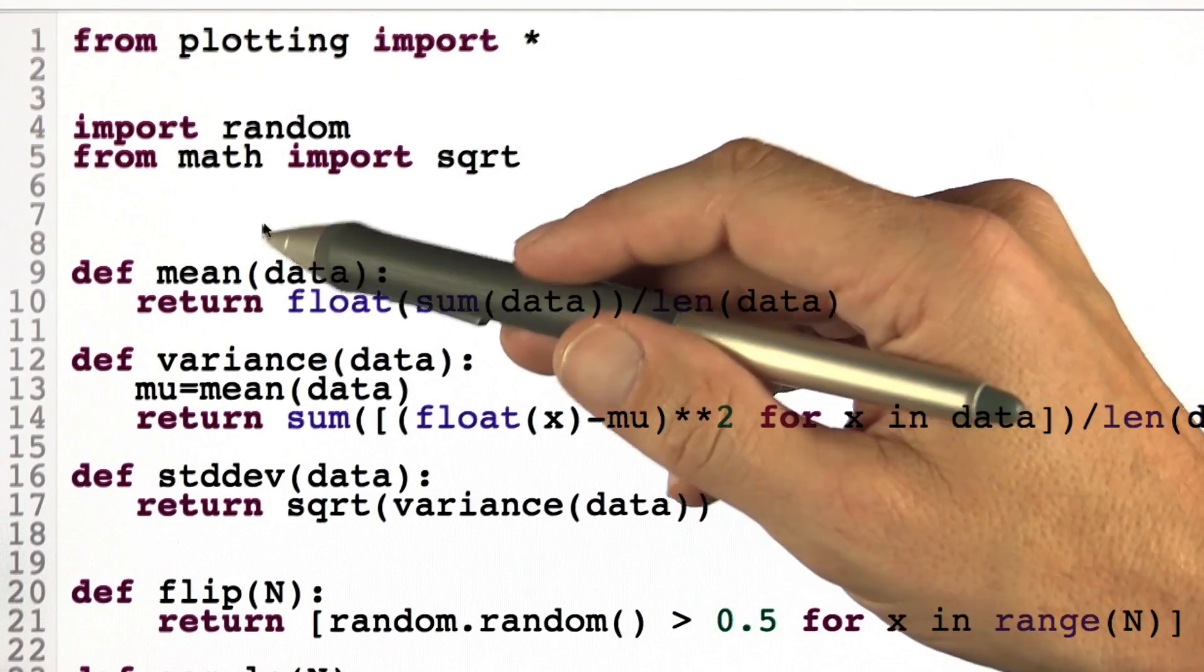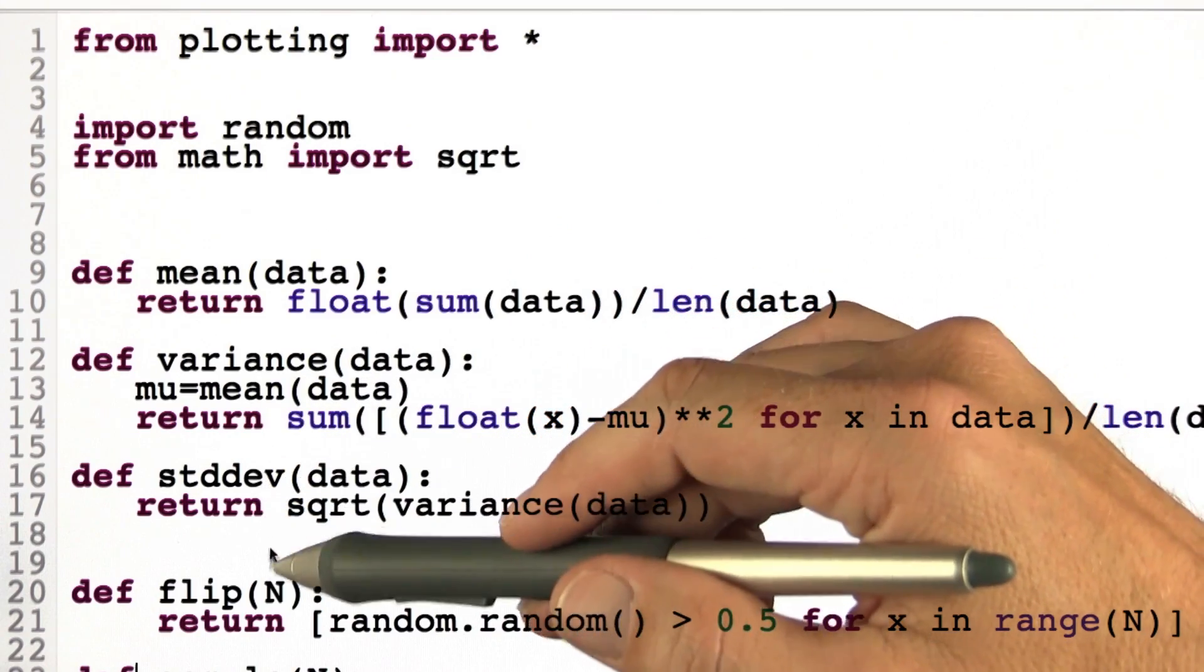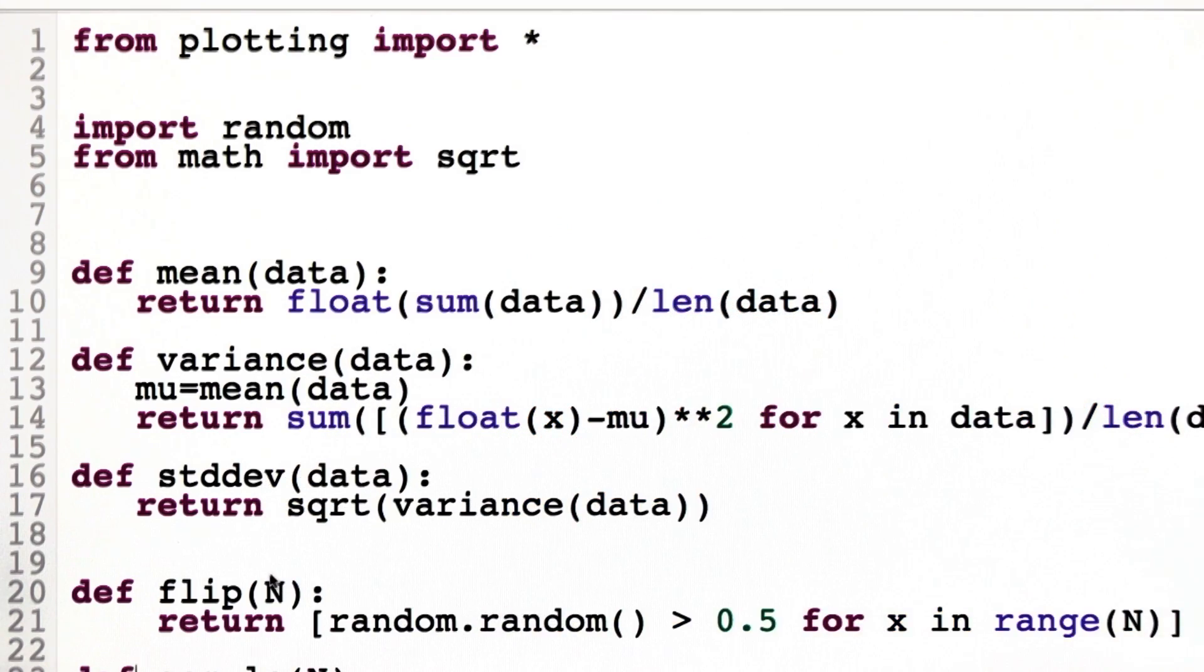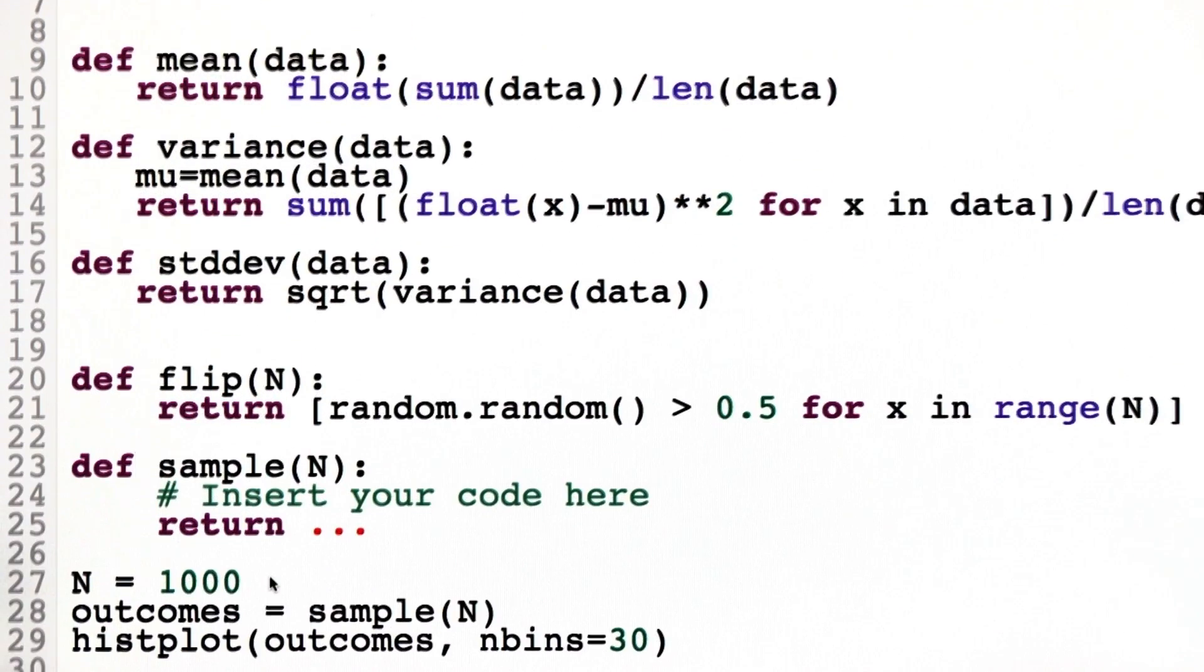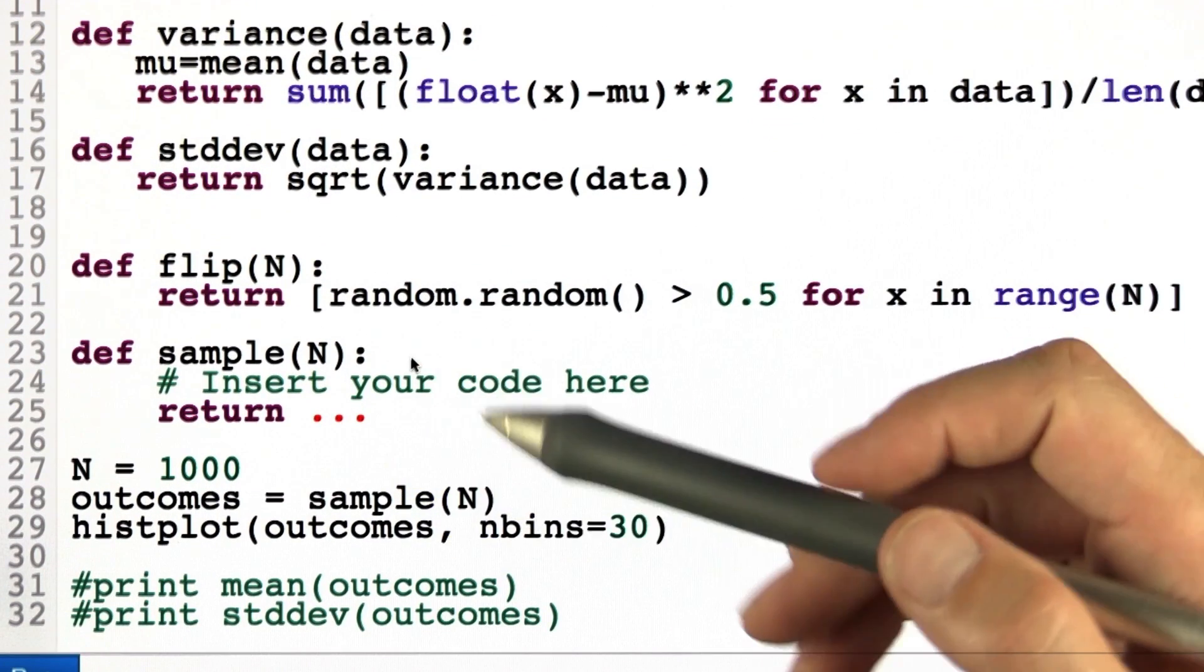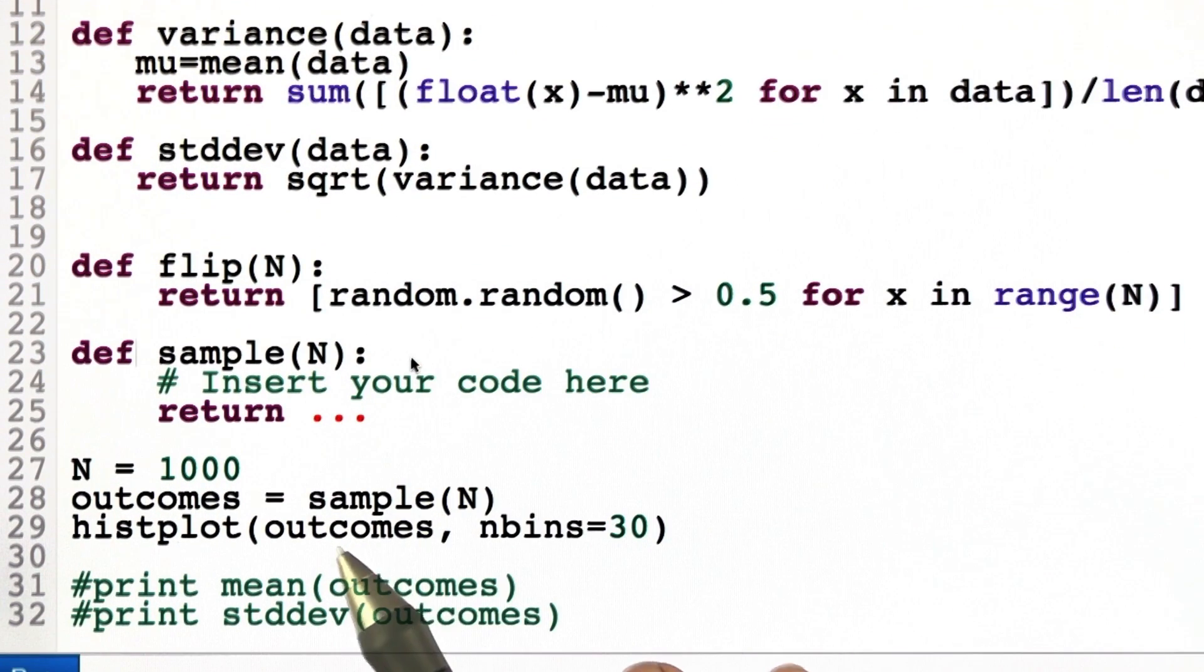I'm giving the same functions as before: mean, variance, standard deviation, and flip. And as I scroll down, I find this function sample. I want you to put in code over here so that when I sample with the same n...